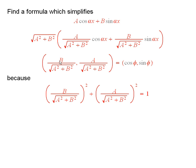Now, if you look at this ordered pair here, b over the square root of a squared plus b squared, comma, a over the square root of a squared plus b squared, that ordered pair is equal to the cosine of phi, comma, sine of phi.